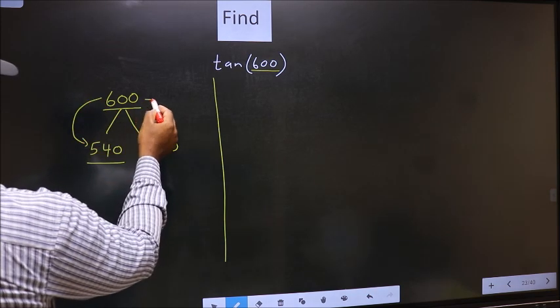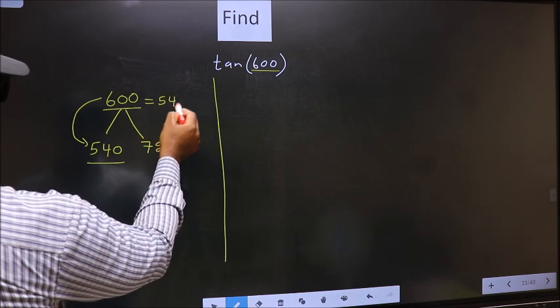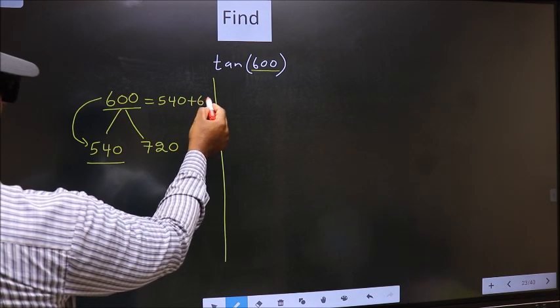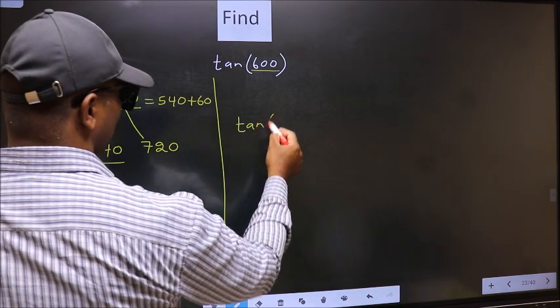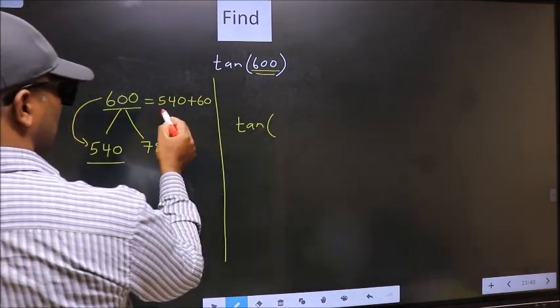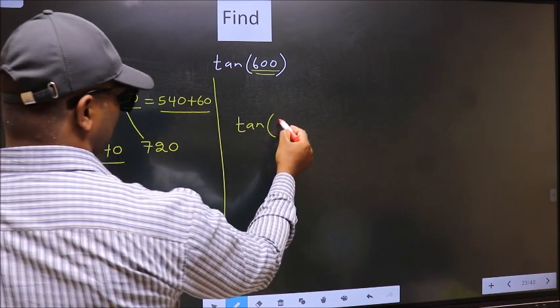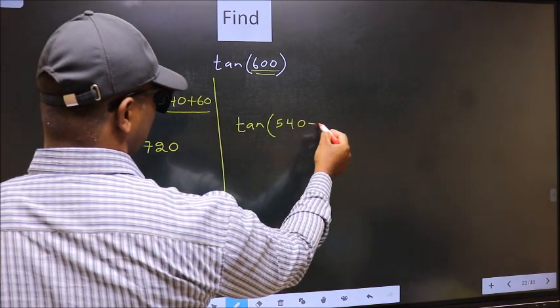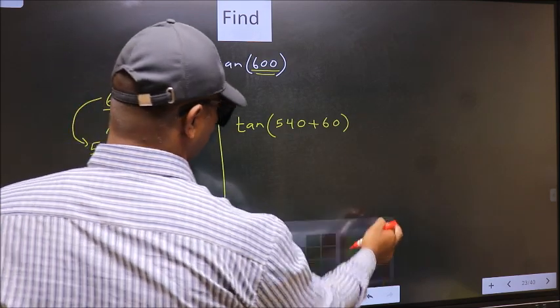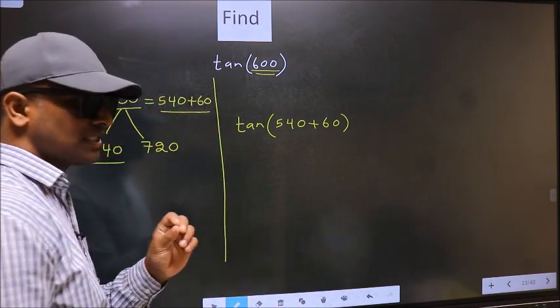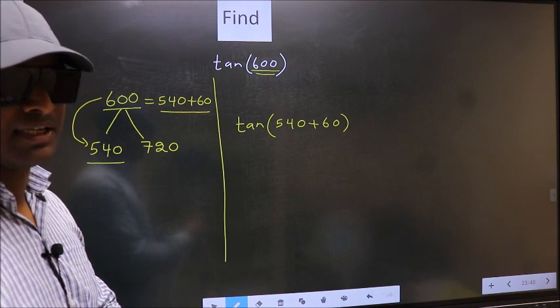So in place of this, now we should write 540 plus 60. So this will become tan of 540 plus 60. This is your step 1.